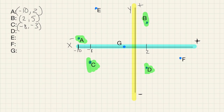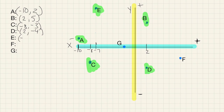Let's look at D. Starting at 0, 0, I count 1 through 7 to the left, so this is negative 7. And then up 1 through 8. So we have negative 7, positive 8, because we are going up.